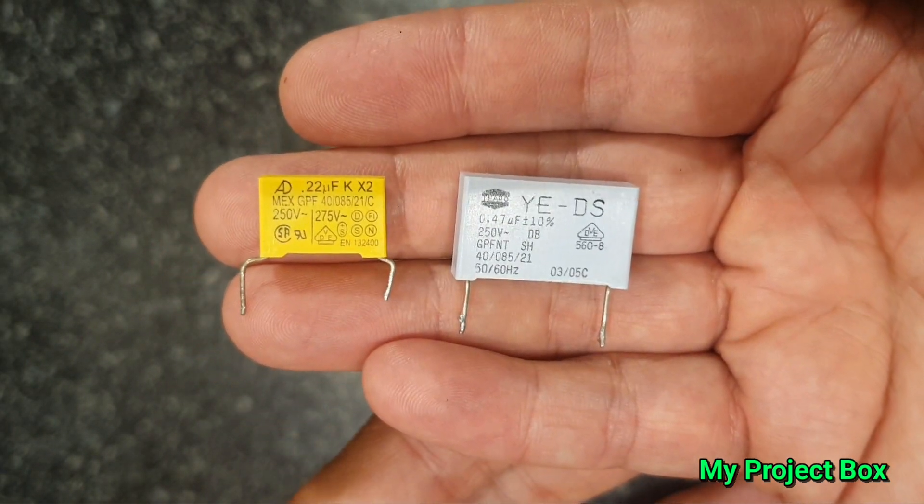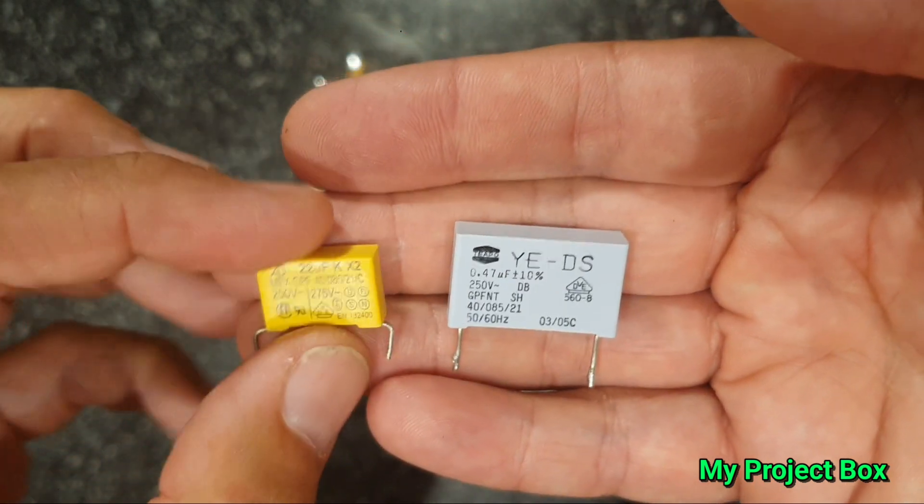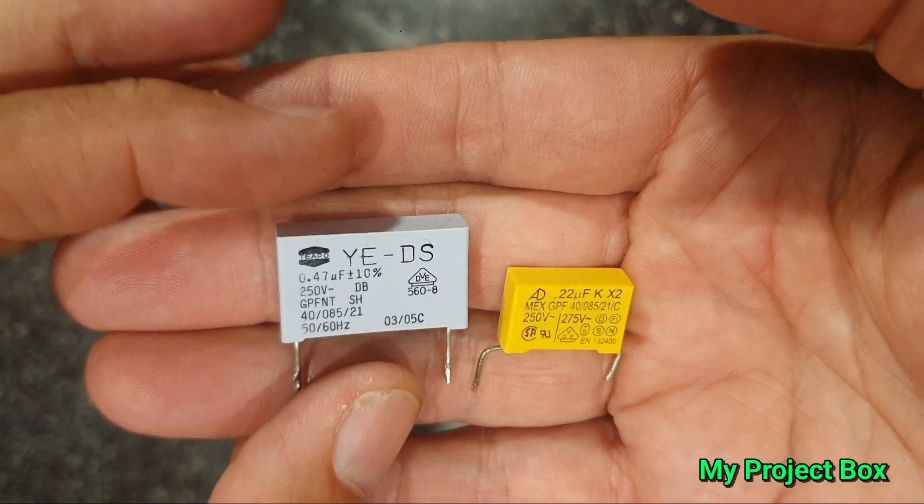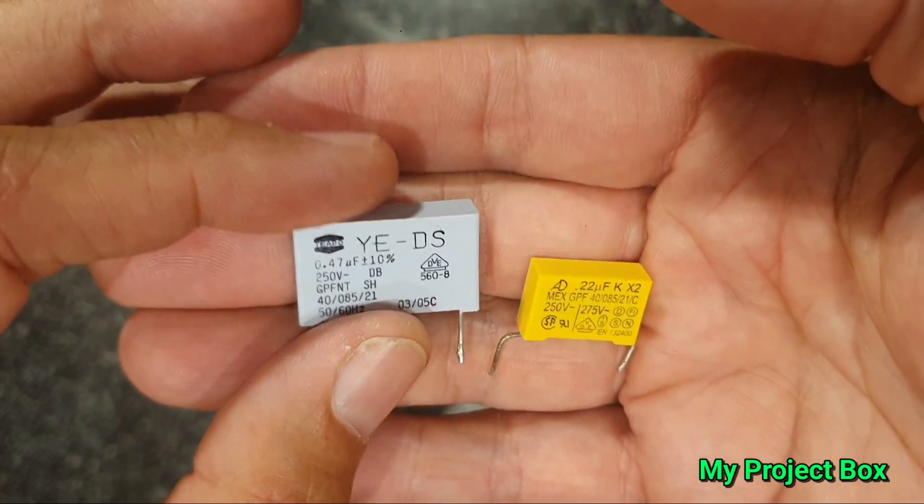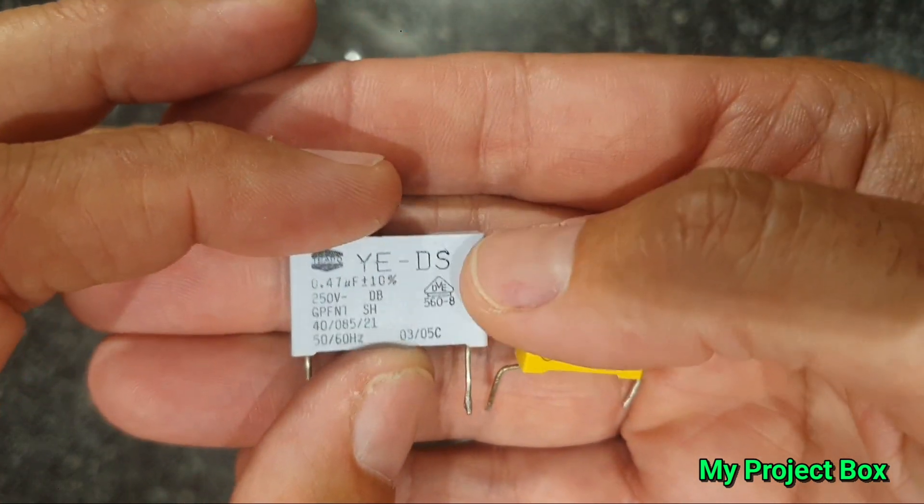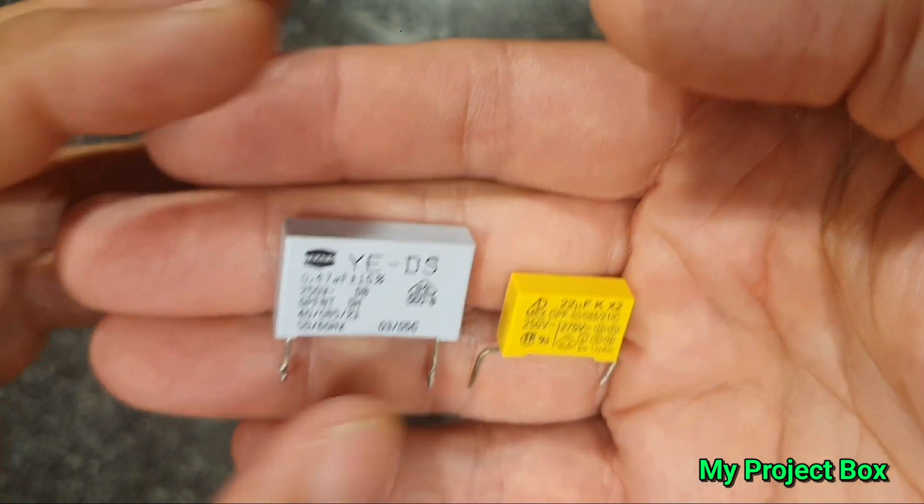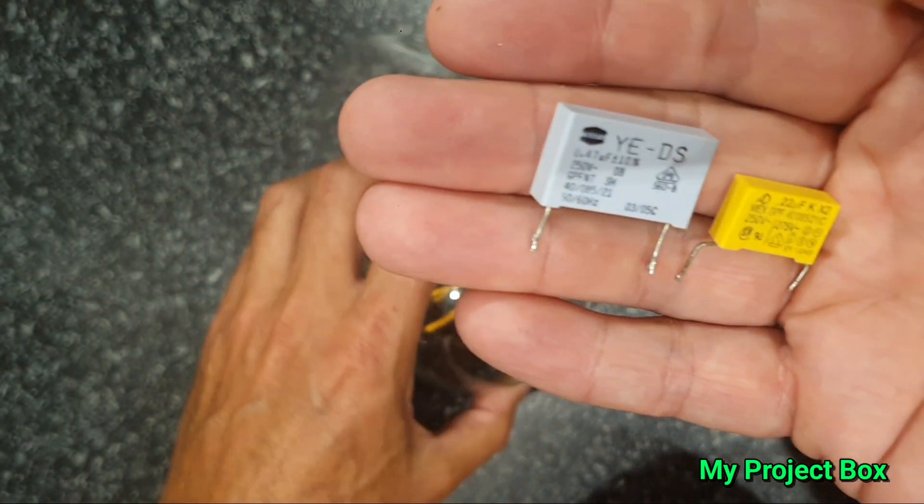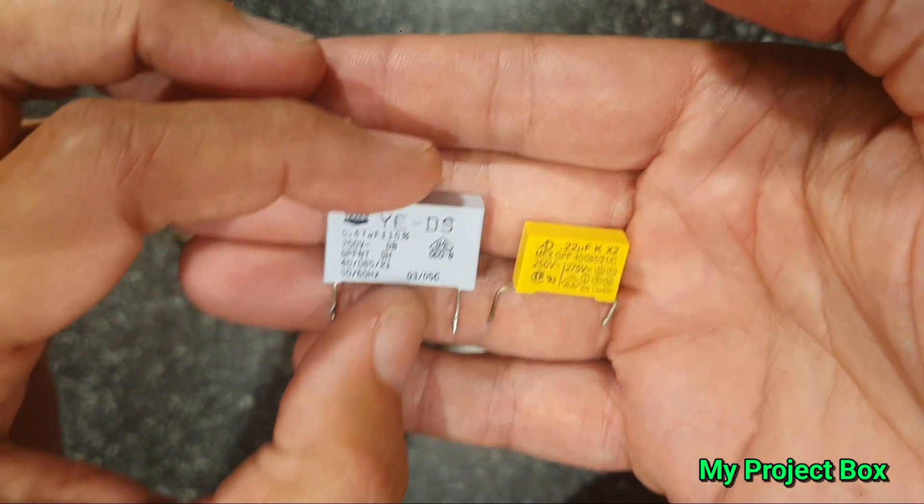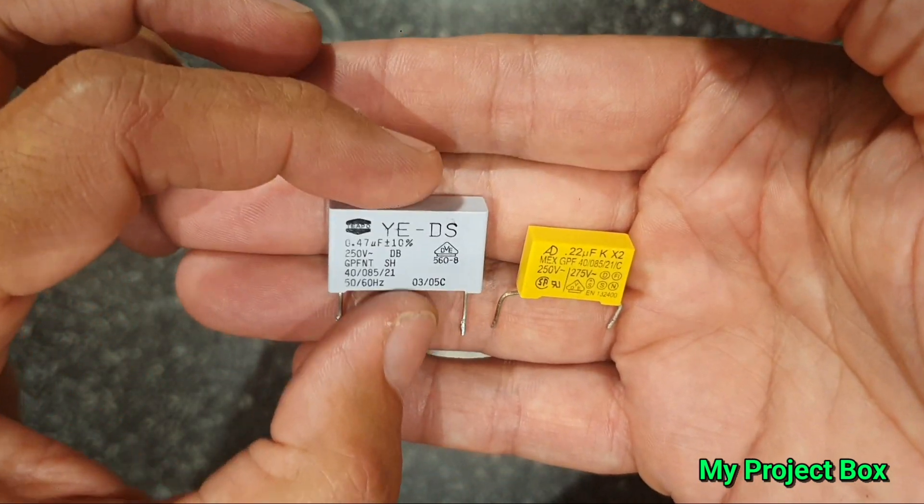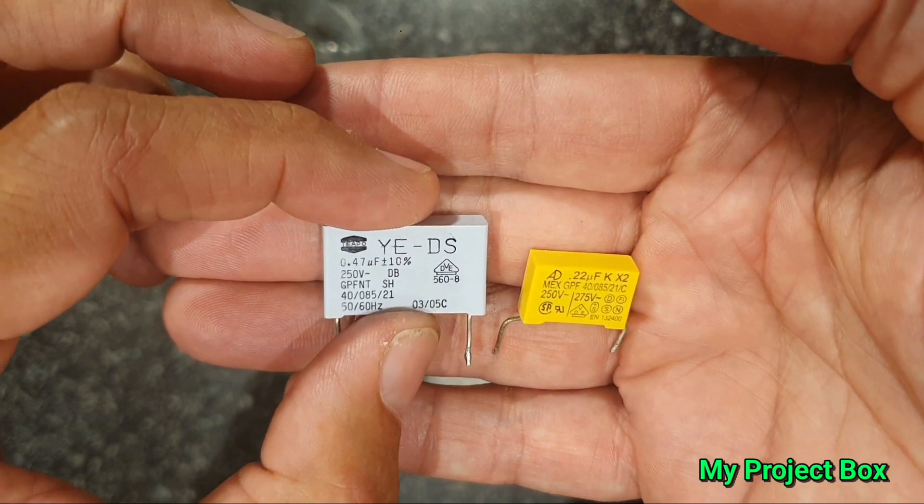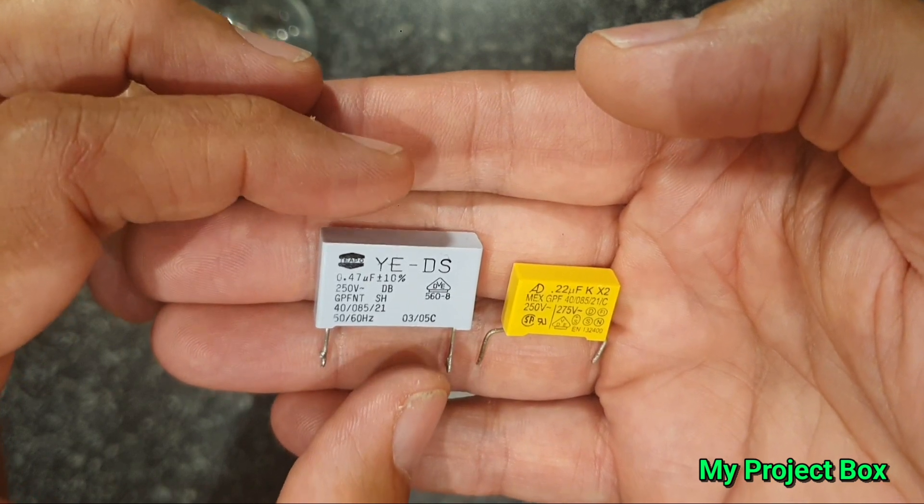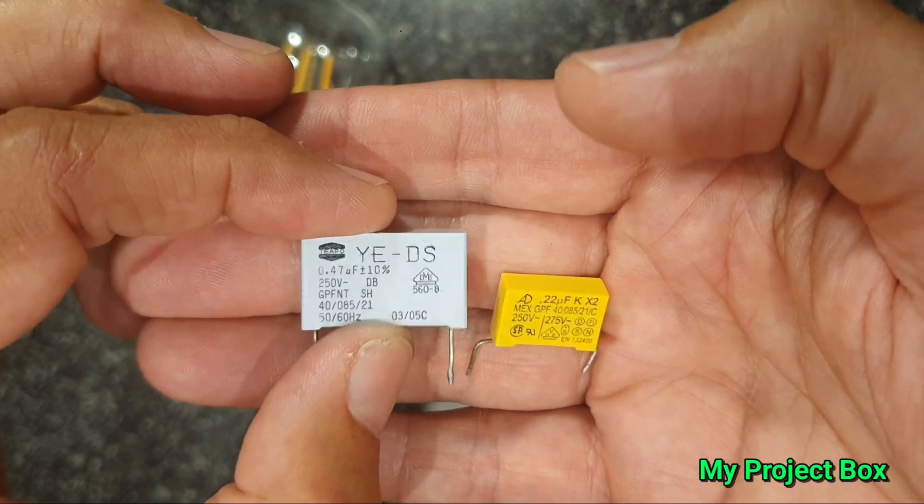So these capacitors can be salvaged out of various old power supplies and things like that, or you could just buy them on eBay or on Amazon online. They're actually a very efficient way to limit the current and the voltage to your LED light bulbs in order to dim them. It's actually a lot more efficient than using something like a resistor to limit the current, because a resistor would bleed off all the excess energy as heat, and wasting heat is not light, so that's actually very wasteful.